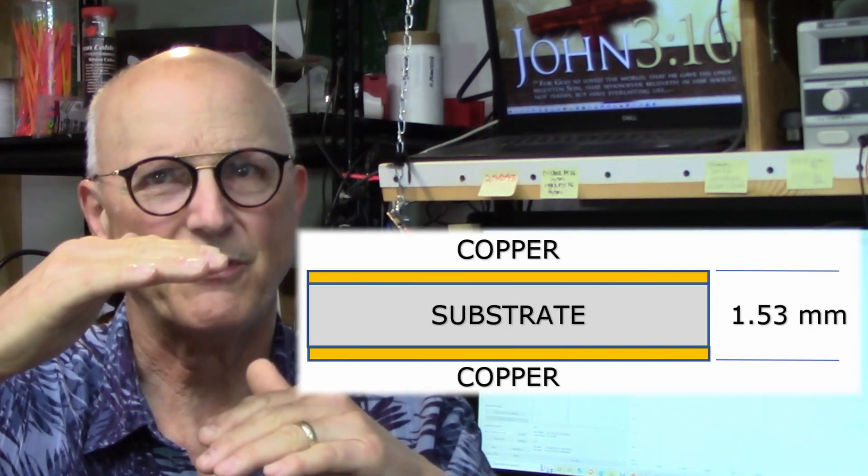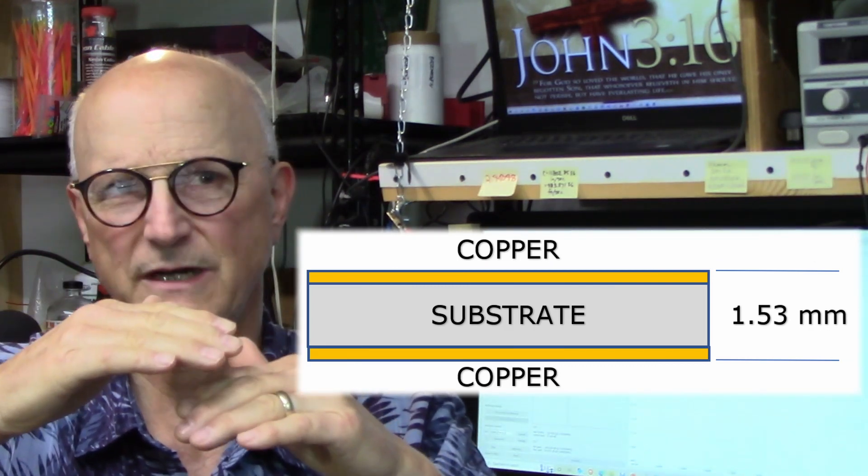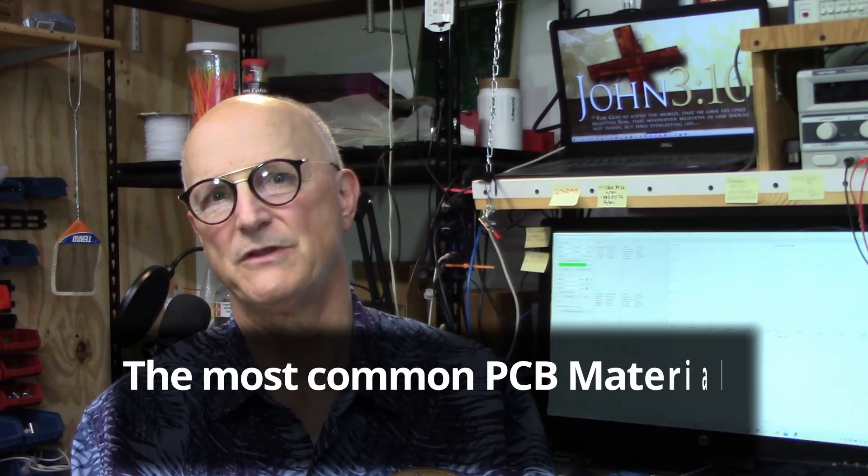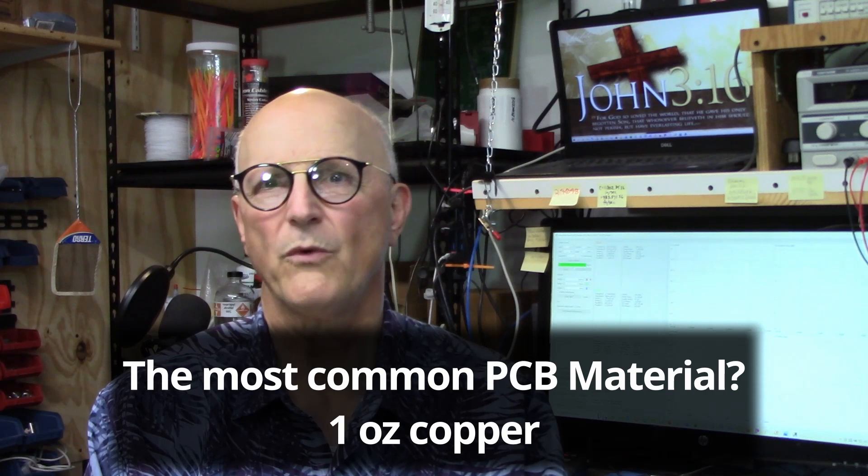Now let's turn our attention to the thickness of the substrate or dielectric material. Now we measured the overall thickness of the PCB material at 1.53 millimeters. And this includes the copper on both sides and the substrate. So we have to subtract out the thickness of the copper itself. And you say, well, how on earth do we do that? Well, we make an assumption and then look up the value on a table.